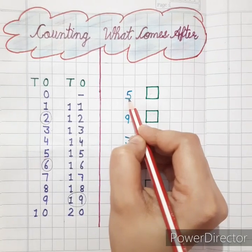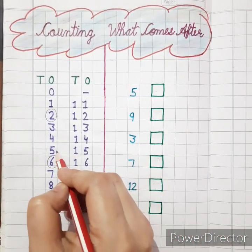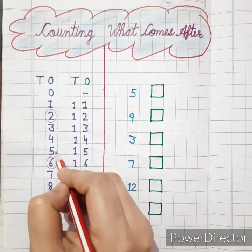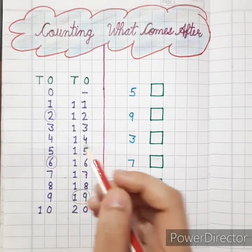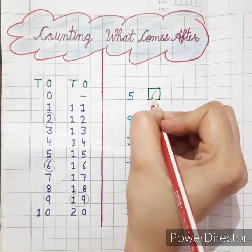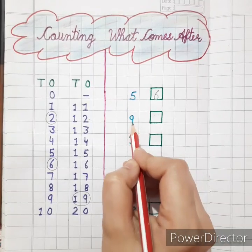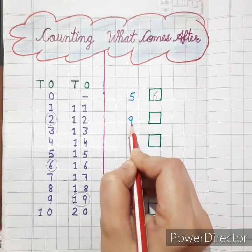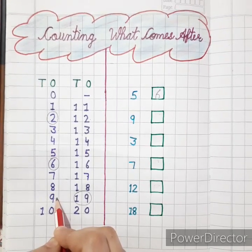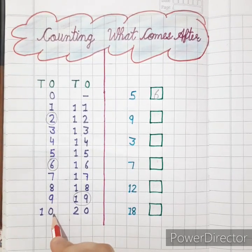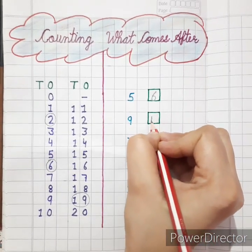So this is 5. Now kids, tell me what comes after 5. That is 6. So we will write 6. Now this is 9. What is the next number of 9? That is 10. So write down 10.